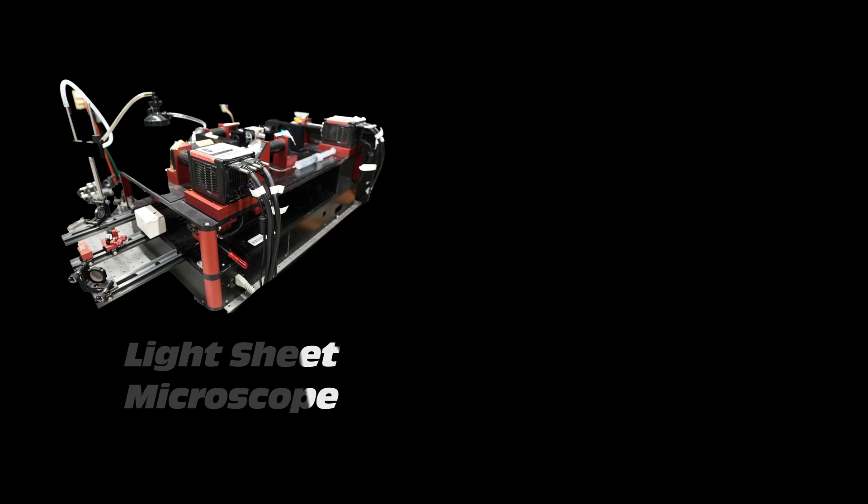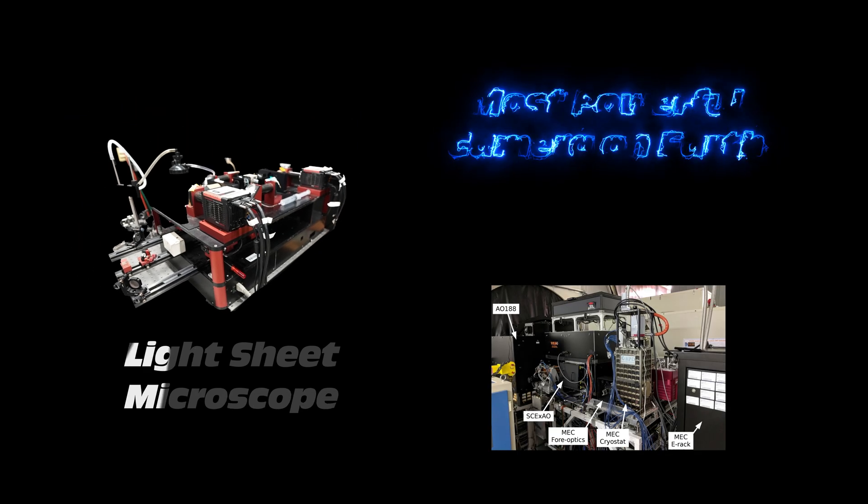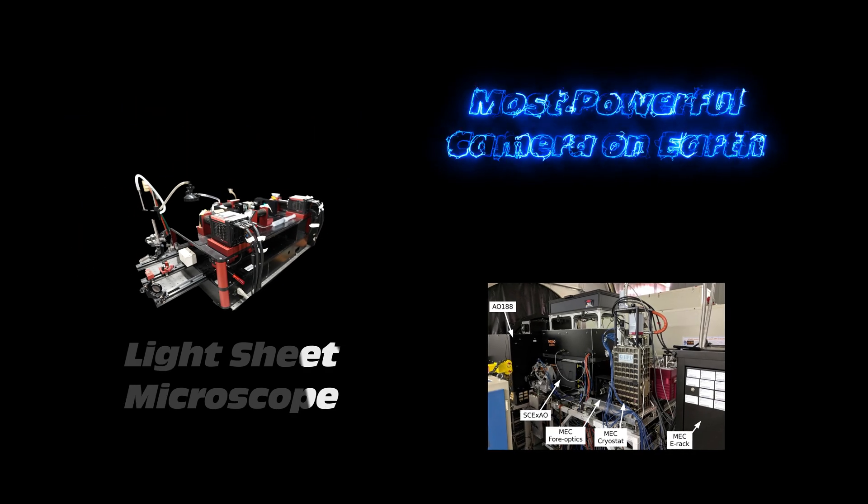What happens when you take one of the most powerful microscopes for biological imaging and combine it with a superconducting camera designed to image planets around nearby stars at the biggest telescopes in the world?